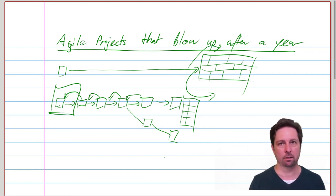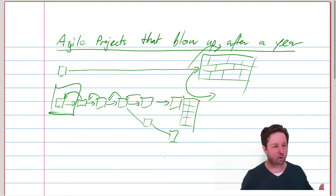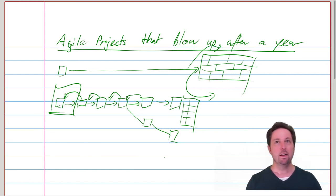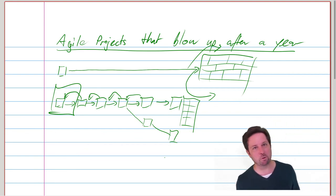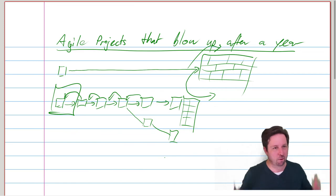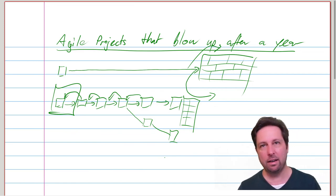A decent agile project that has locked in some of the value already cannot possibly blow up after a year because it will already have captured at least partial value. And maybe the result will be disappointing, but something must be there. And this is how you can tell whether you're doing a proper agile project.